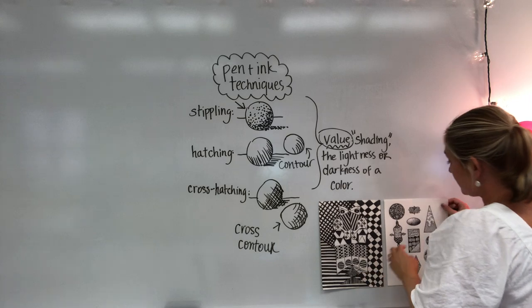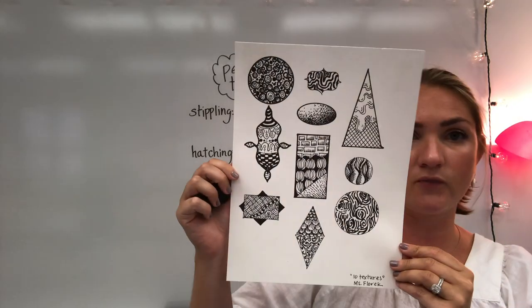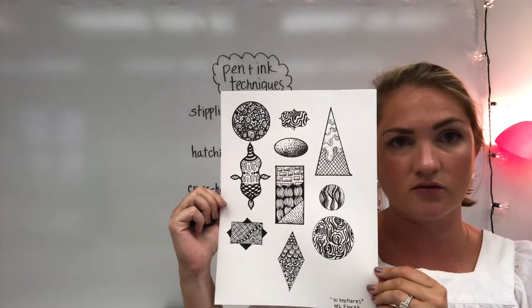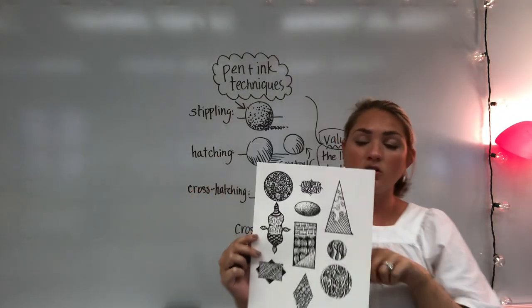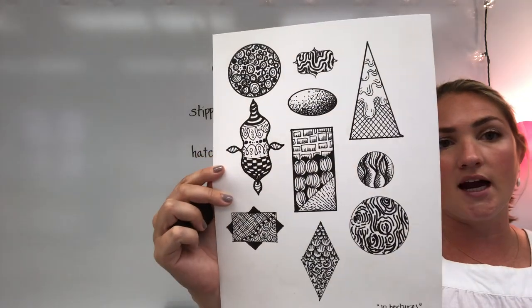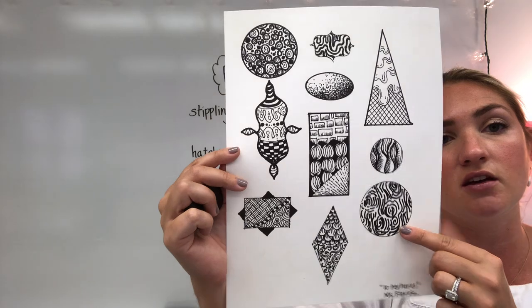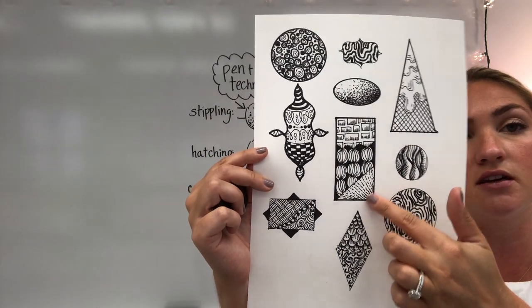What you're gonna be doing for your homework assignment is you are going to draw ten shapes. Okay this is my example and I'll have a picture of it posted on Schoology. You're going to draw ten shapes and in those ten shapes you're gonna draw a variety of textures. So you can draw just one texture in some of them, you can draw a couple in some of the other ones.